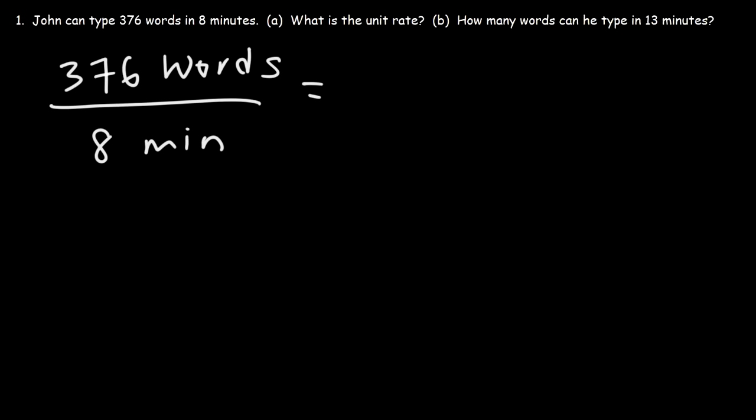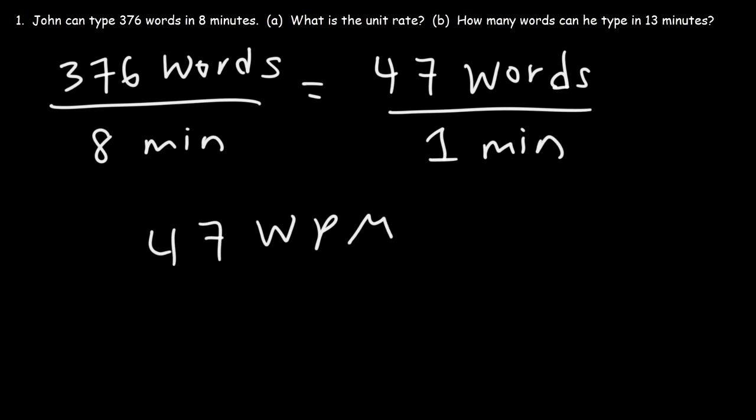So if you divide 376 by 8, you're going to get 47. So he can type 47 words in one minute. So that is his unit rate. We can also write 47 WPM, which stands for words per minute.